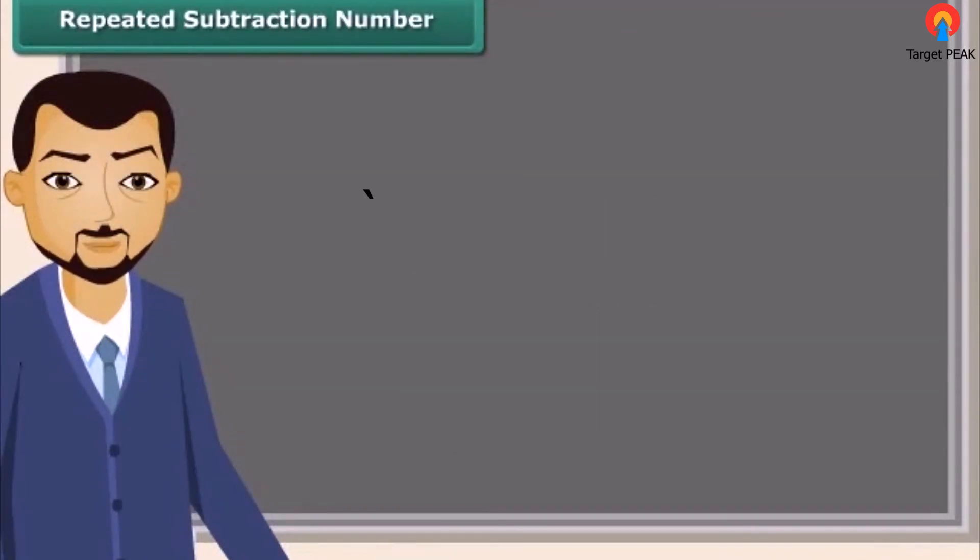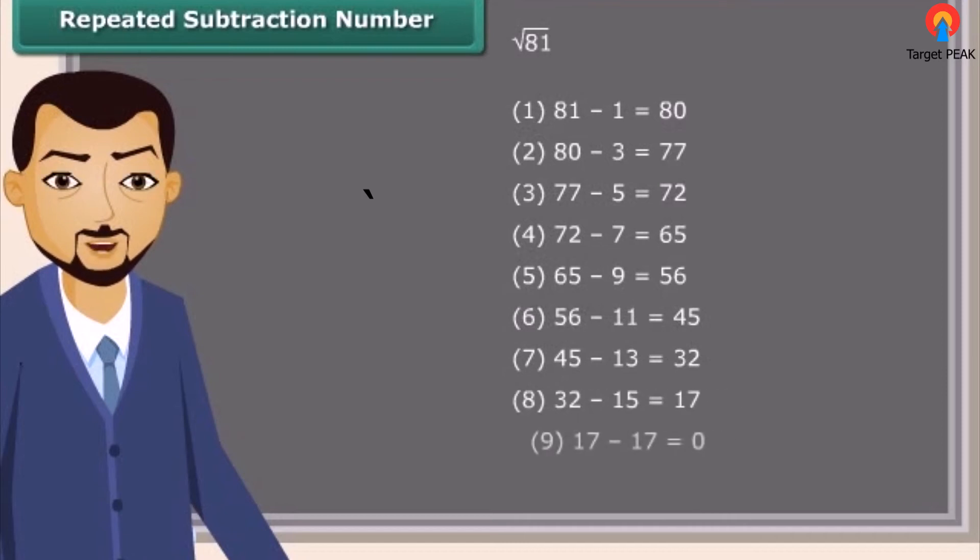We can find the square root of a given number using repeated subtraction method. It is really easy. Consider the square root of 81. Just subtract successive odd numbers from 81 starting from 1 till the difference becomes 0. You have noticed it took 9 steps to get the difference as 0. Therefore, the square root of 81 is 9.